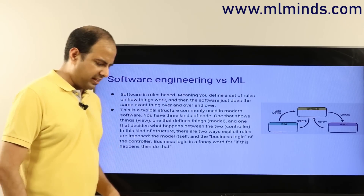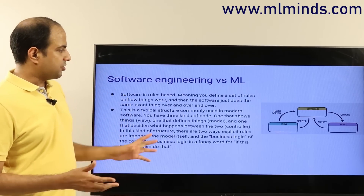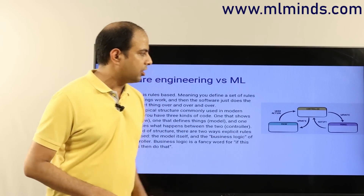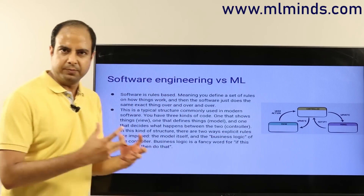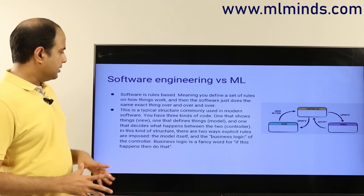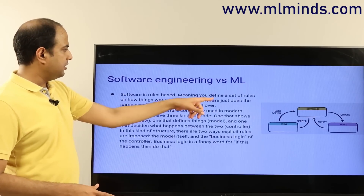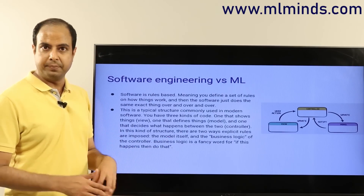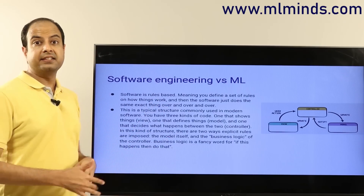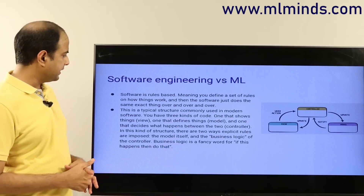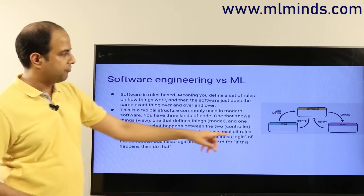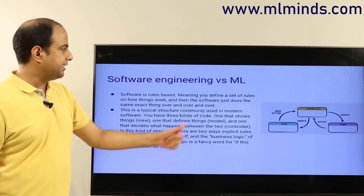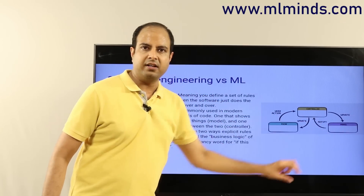To differentiate machine learning from a software engineering perspective: in software engineering, engineers practically create views, controllers, or models — though that model is different from a machine learning model. Software is rules-based: you define a set of rules on how things work, and the software does the same exact thing over and over. You write software to do tasks repeatedly, but you define the rules upfront. The view handles visualization, and the model defines flow in a rule-based way.